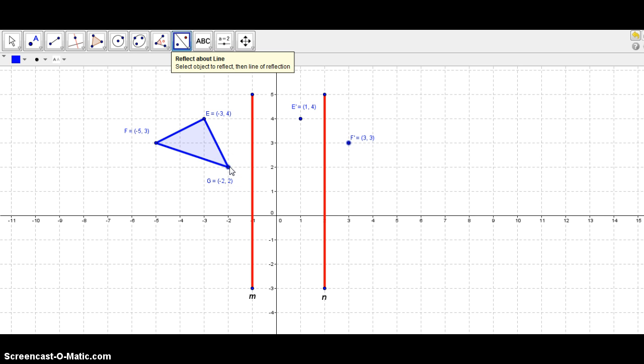Now let's do vertex G, and that's one unit. So therefore the reflection would be one unit on the other side of line M, which is this point here.